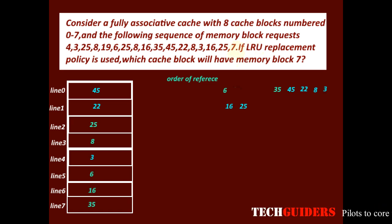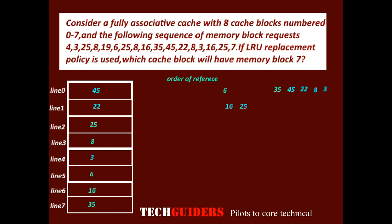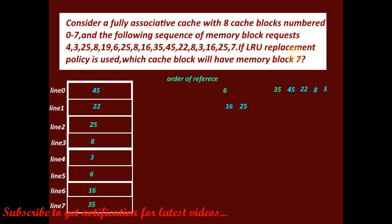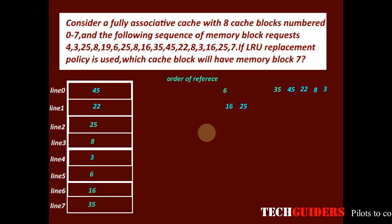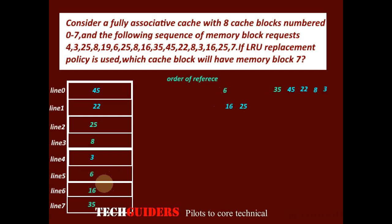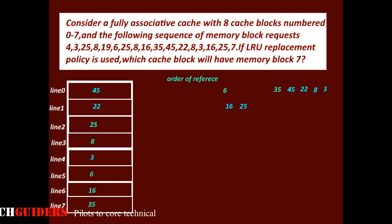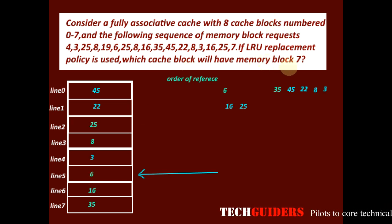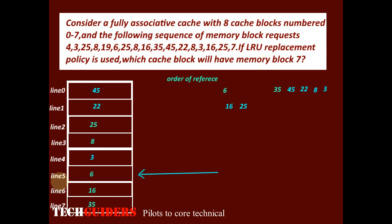Now we have the request for block 7. Block 7 is not in the cache, so we must choose one block for replacement. The least recently used block is block 6, and block 6 is residing in cache line 5. We replace block 6 with block 7. Therefore, memory block 7 goes to cache line 5, or cache block 5.